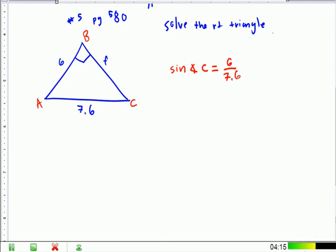Does that make sense? And in case you forgot, it's SOH-CAH-TOA, okay? So now, someone divide 6 by 7.6. What do you get? Point what? .789.